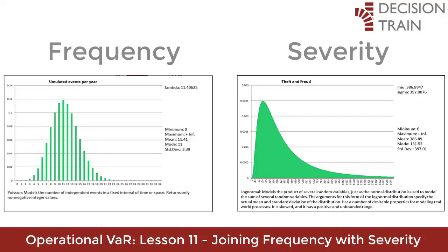How is the number generated by the Poisson frequency distribution arithmetically related to the number generated by the log normal severity distribution? A first approach would be multiplication. It makes a lot of intuitive sense to multiply the frequency by the severity. If you have a number of events generated per year — the frequency — and each of them has a certain severity, then just by multiplying one by the other, we obtain the magnitude of the risk.